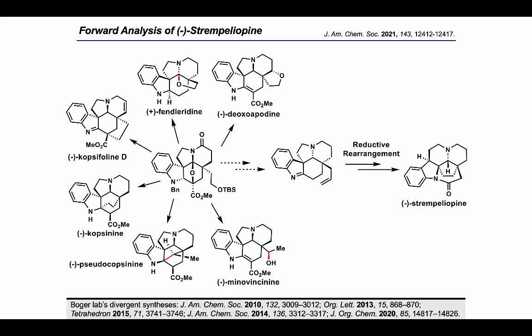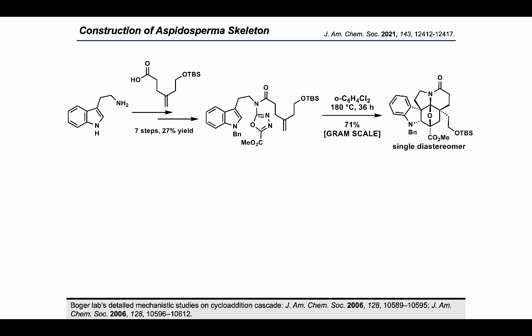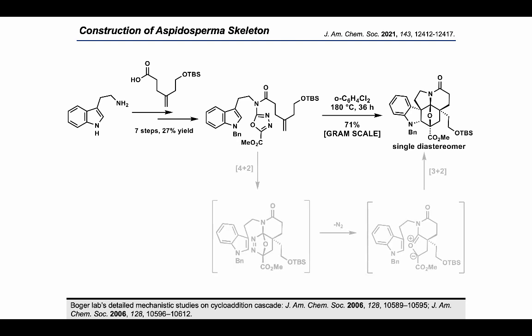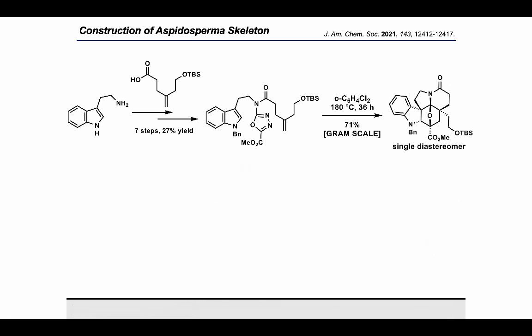The synthesis began with tryptamine, which after seven steps in 27% yield generated a 1,3,4-oxadiazole. Upon heating this compound in 1,2-dichlorobenzene at 180°C for 36 hours, the desired cycloaddition cascade occurred to give the corresponding cycloadduct in 71% yield on a gram scale as a single diastereomer. The mechanism begins with a 4+2 cycloaddition between the olefin and the oxadiazole to give the corresponding azobicycle, which subsequently eliminates thionitrogen to give a stabilized 1,3-dipole.